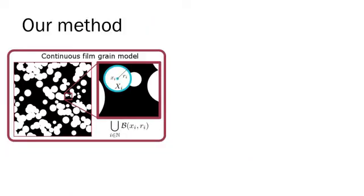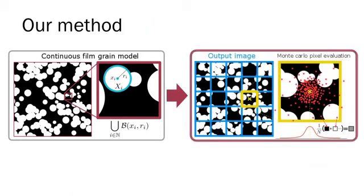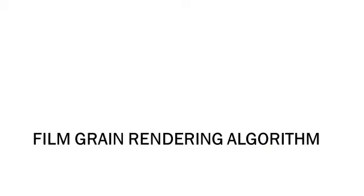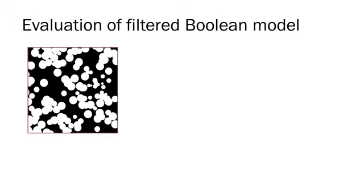Now that the film grain model has been defined, the output image can be rendered. Thus far, our film grain model is continuous, and we must evaluate this model on a discrete grid to create the output image.